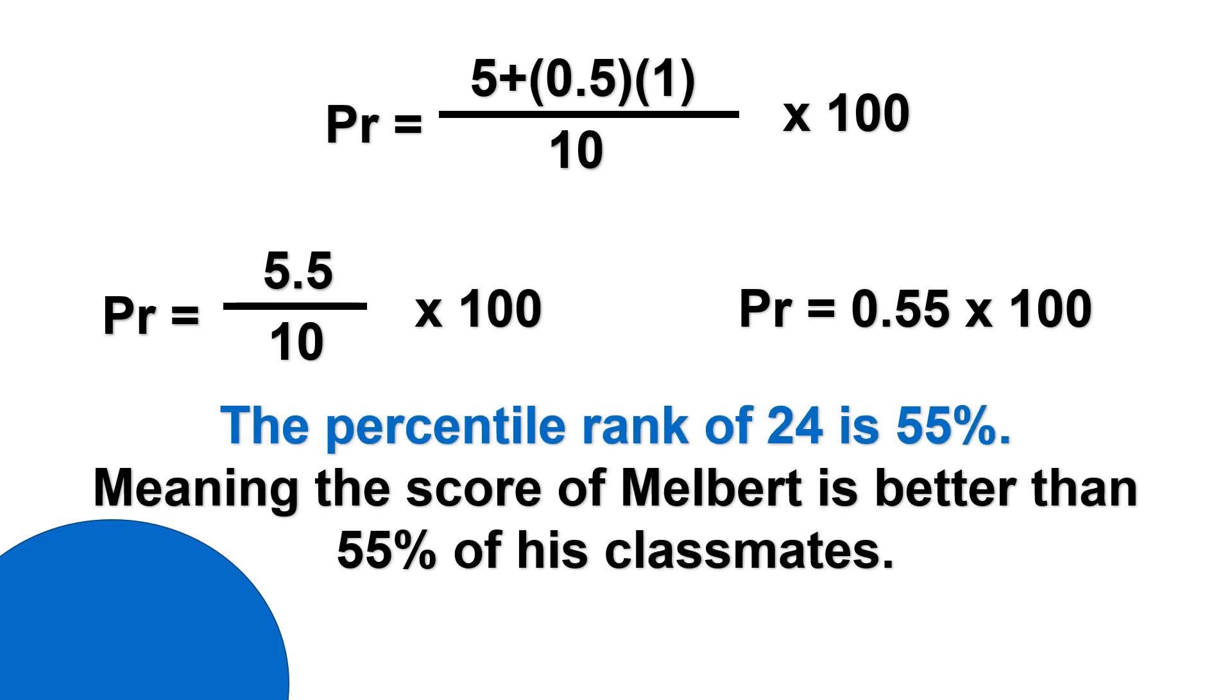The percentile rank of 24 is 55%. Melbert's percentile rank is 55%. So, meaning, the score of Melbert is better than 55% of his classmates.